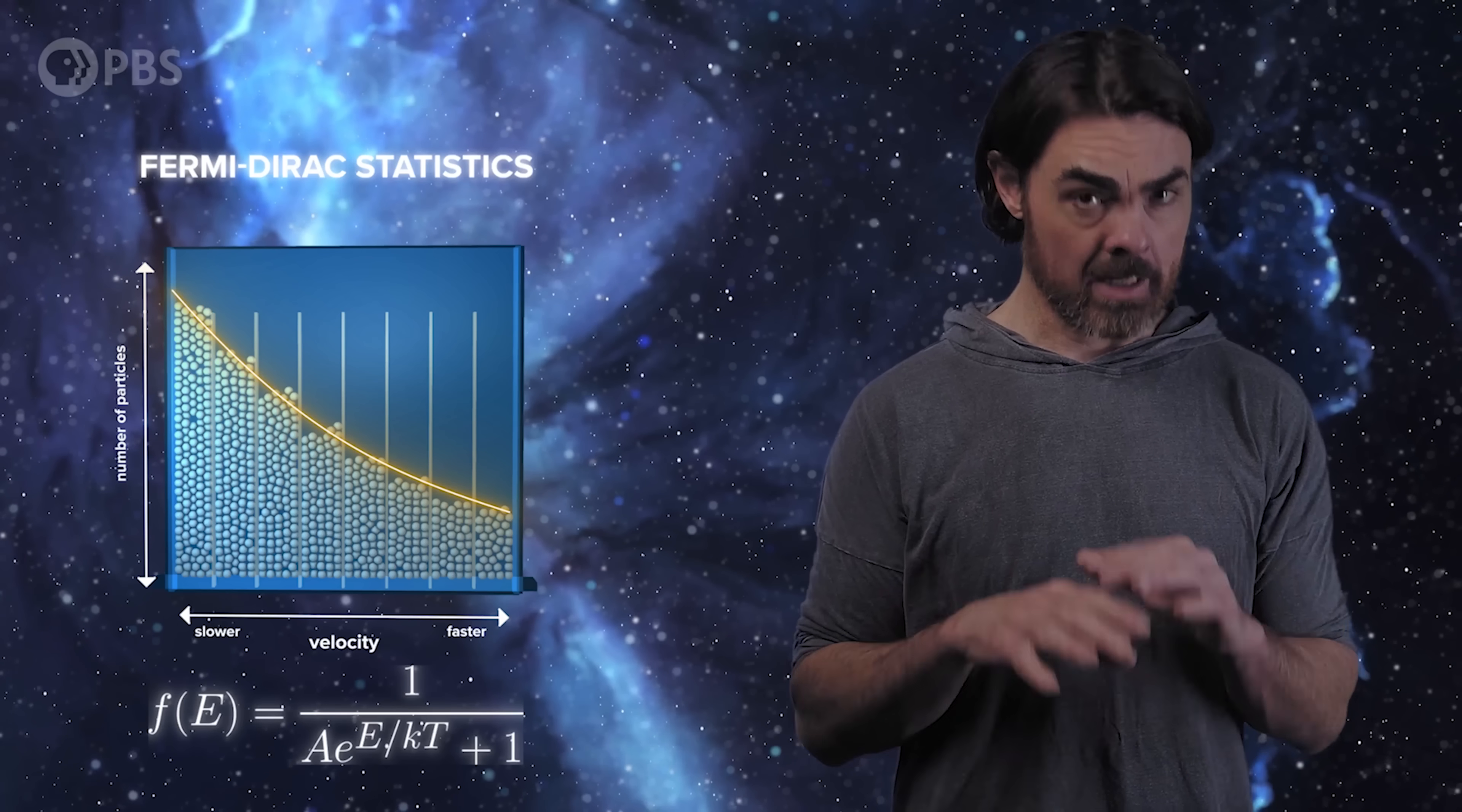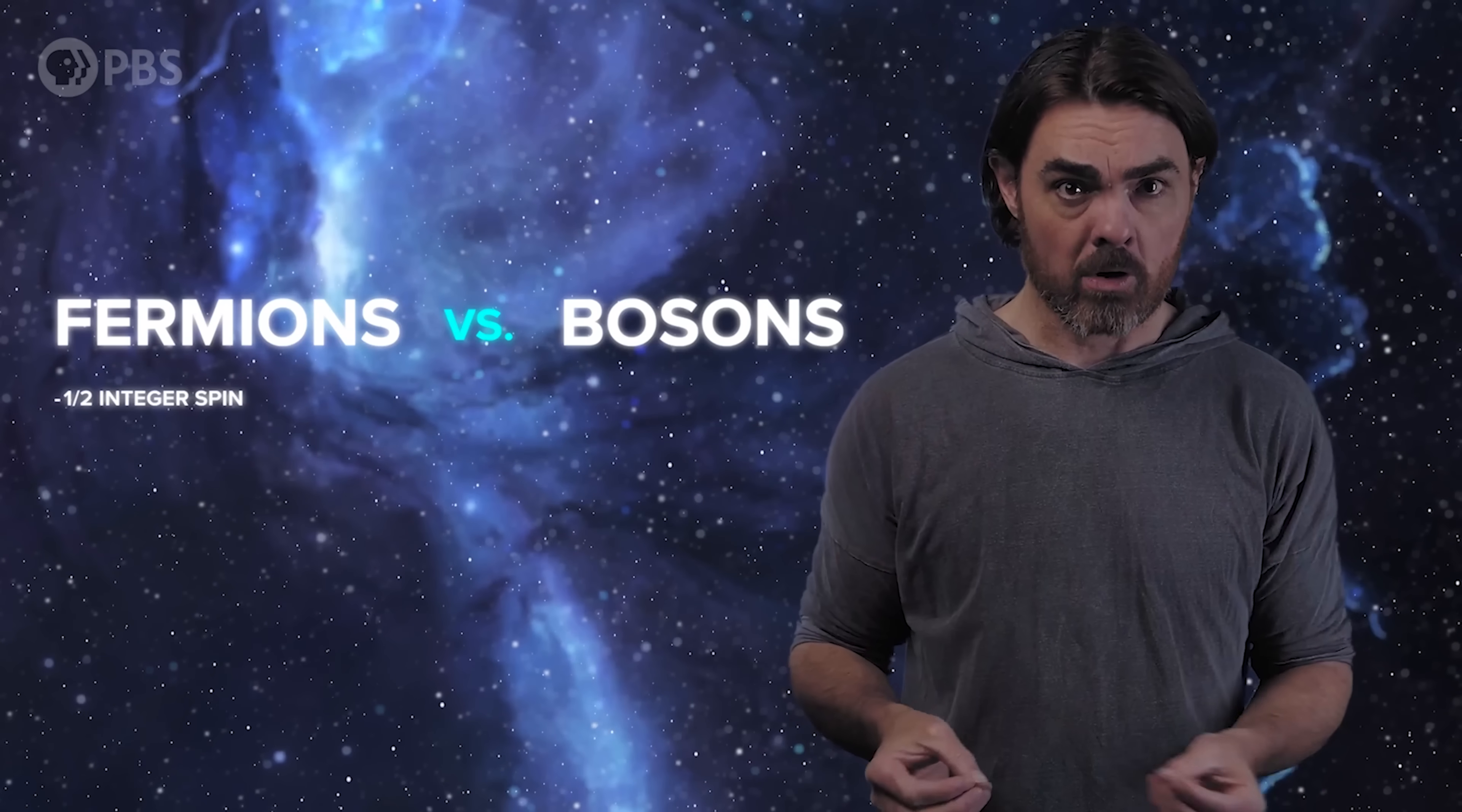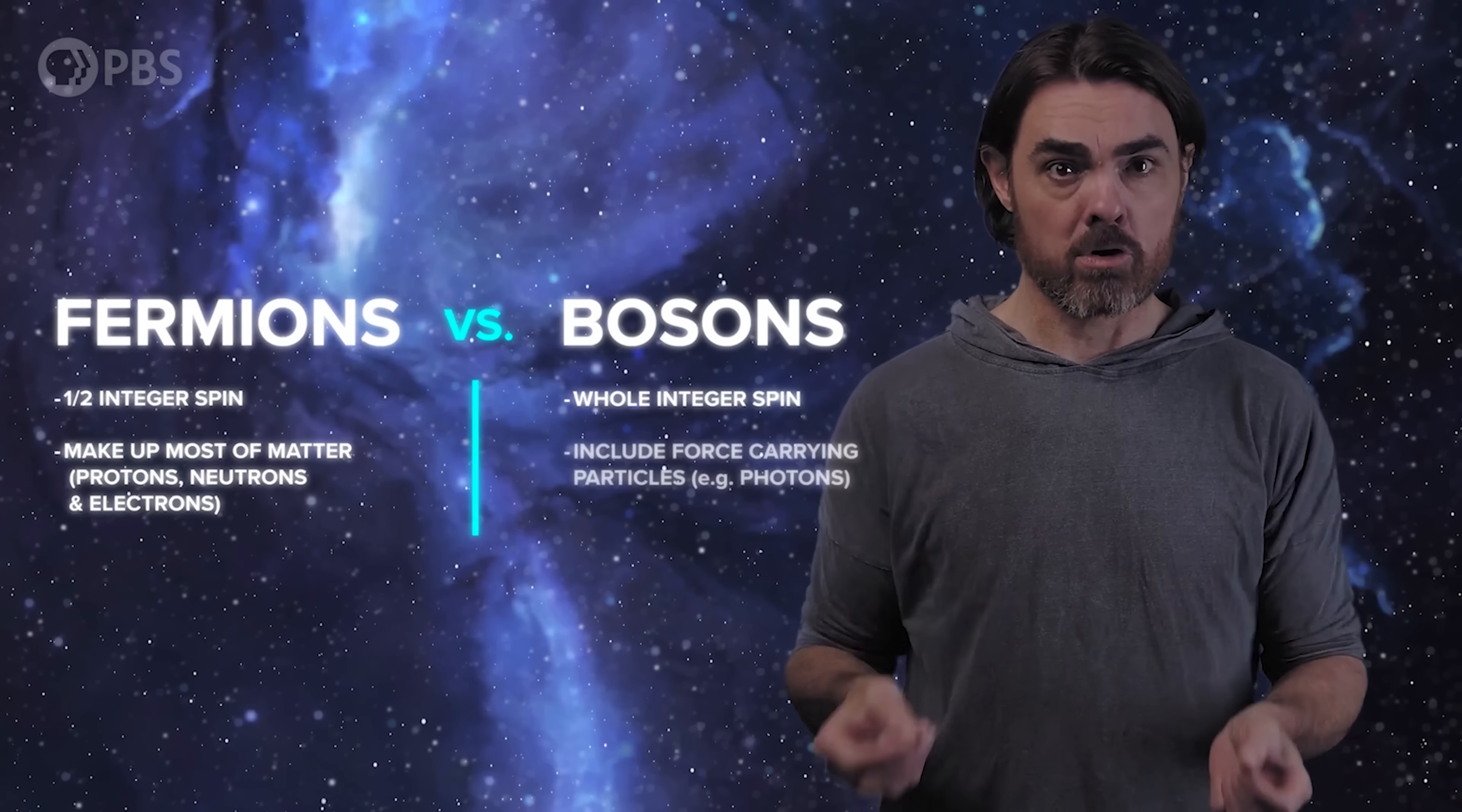Fermions are indistinguishable and they are restricted to one per energy bin. We talked about why exactly some particles should suffer this restriction in our episode on spin statistics. But in short, particles with a quantum spin value that's half integer, a half, 3 over 2, 5 over 2, etc., are forbidden from overlapping because quantum mechanics. These are fermions and include the particles that make up most of matter, electrons, protons and neutrons. Particles with integer spin, 0, 1, 2, etc., are bosons and include the force-carrying particles like photons.